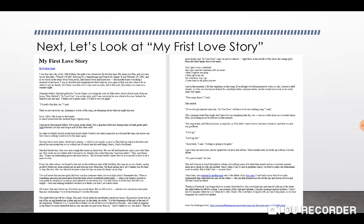Now we're going to look at My First Love Story. One of the things she does right in the beginning — just after the song lyrics, about a third of the way down the first page — is: 'I had never been kissed before.' That shows time, because 'I had never been kissed' is what had happened before the event she's talking about. Then, towards the bottom of the page in the third paragraph from the bottom: 'You will never kiss anyone again, like how you kiss someone when you're in high school.' The fact that you will never do that again — she's talking about your future. Then she says 'Remember this,' which is present tense. 'There is something innocent and passionate about the high school sweetheart relationship, when your biggest concern is your grade' — all of that is present tense. Then in the next paragraph: 'Of course, Dan and I broke up' — now we're back in past tense, because she's back to her event.